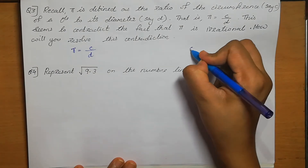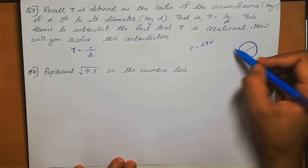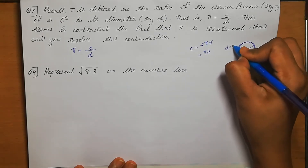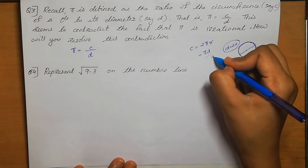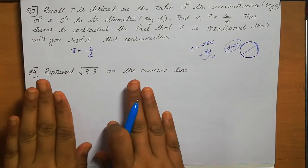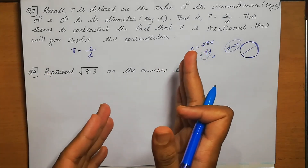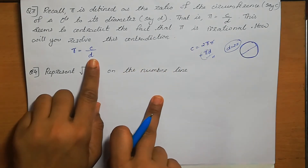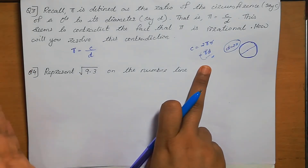The circumference of a circle is 2πr. Here 2r means the diameter d, so circumference can be written as πd. Therefore C by D equals πd divided by d, which gives π only. So π is always an irrational number — there is no contradiction. The circumference gives a non-terminating, non-recurring number, or writing circumference as πd and cancelling d gives π again.